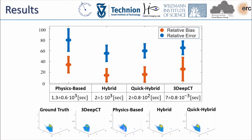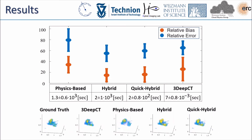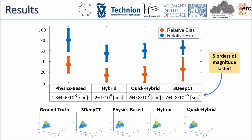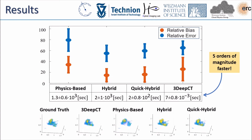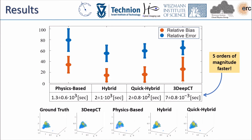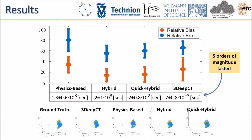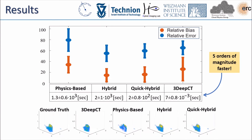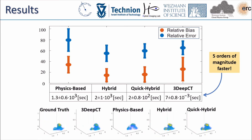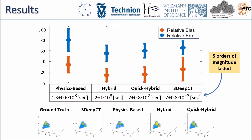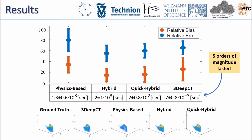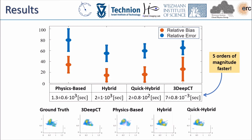While 3DEEPCT yields quality comparable to explicit physics-based methods, it appears to run five orders of magnitude faster. To further improve the recovery, we introduce a hybrid model that uses 3DEEPCT recovery as the initialization for physics-based optimization, and a quick hybrid method that runs with a few iterations. The resultant hybrid technique enjoys fast inference time and improved recovery performance.